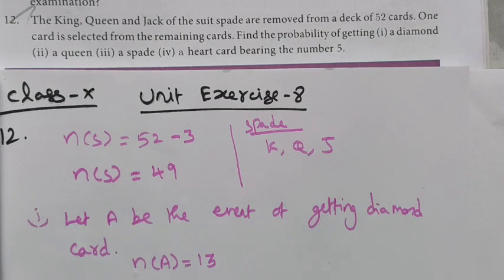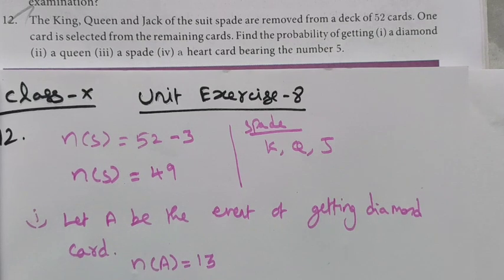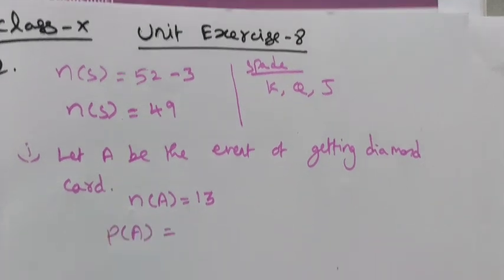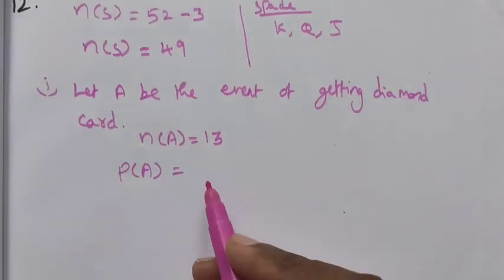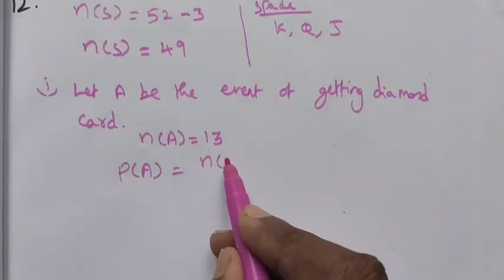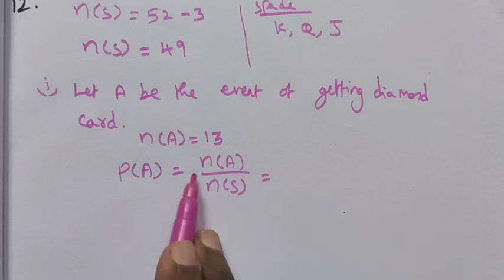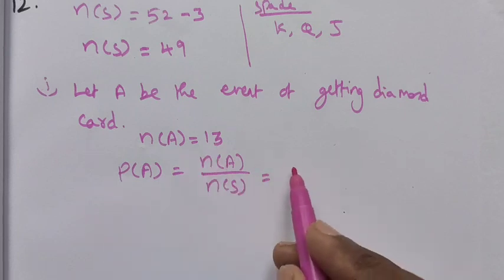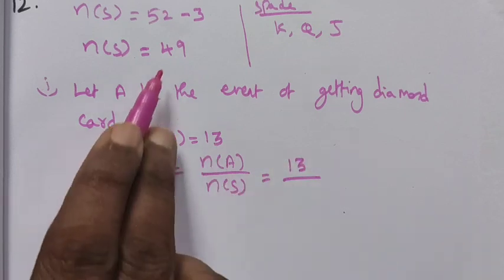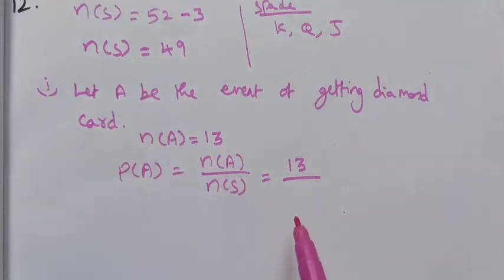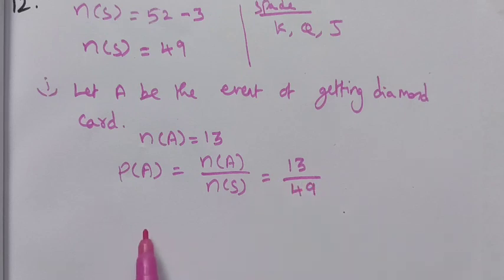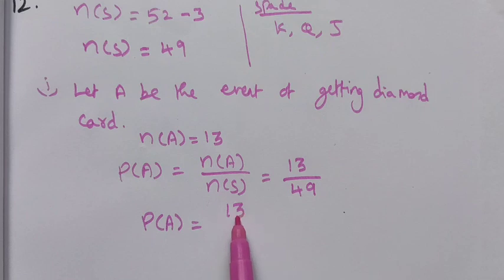Let A be the event of getting a diamond card. The probability of A is equal to N(A) divided by N(S). N(A) = 13 (diamond cards), N(S) = 49 (remaining cards). So the probability of getting a diamond card is 13 out of 49 cards.